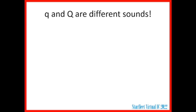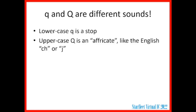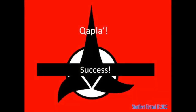The q in nuqneH and the Q in qapla' are different sounds. The one written with the lowercase q is a stop, and the uppercase Q is something called an affricate — it begins by cutting off the flow of air, but instead of going directly into a vowel, there's some tightness that causes frication, a roughness in the airflow that we can hear. English has some affricates like ch and j.